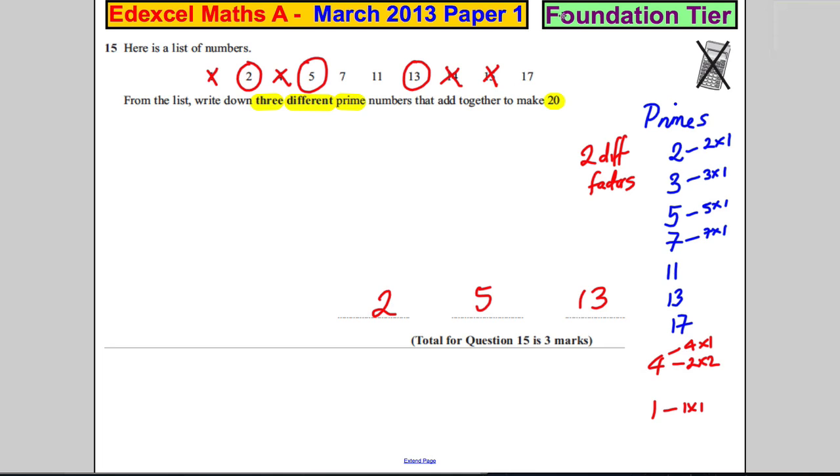There was another - I just had a quick check of the marks here. I wasn't even thinking: 2 add 7 add 11. 2 and 7 is 9, add 11 is also 20. So there were two different answers.